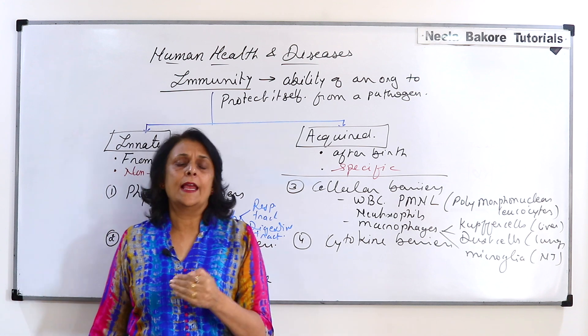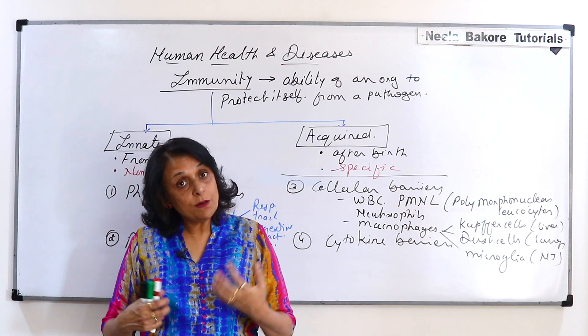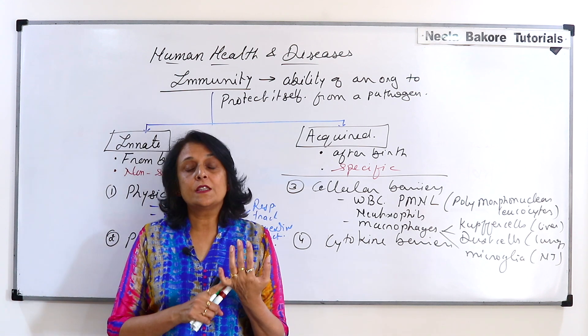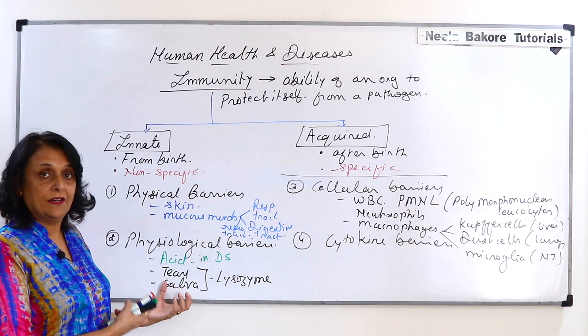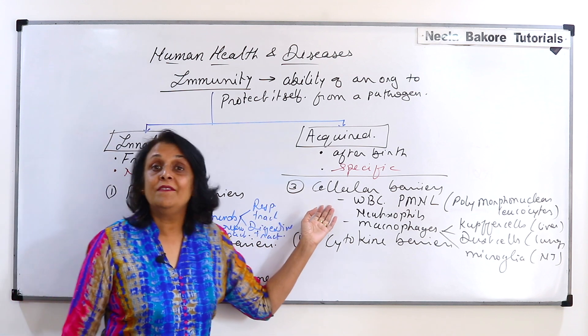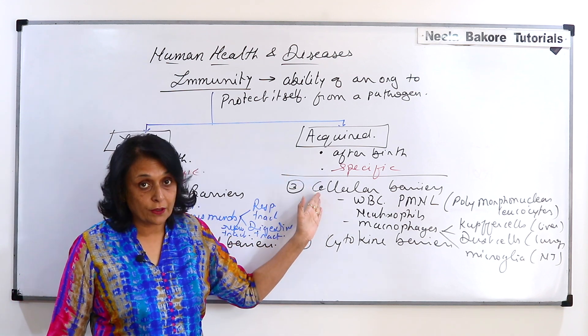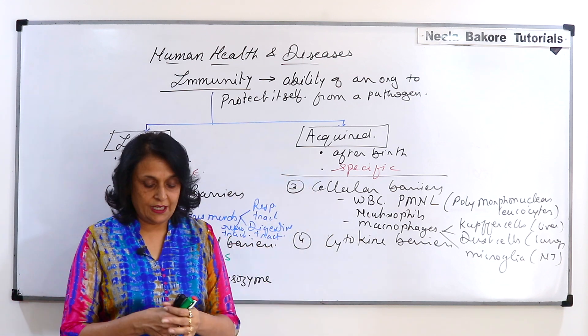So this is a cellular level and we are born with all these things. We are born with skin, we are born with this mucous membrane, we are born with all these secretions which are produced and we have these cells from our birth. So these are all innate immunity types.